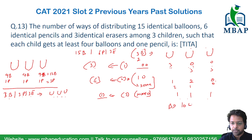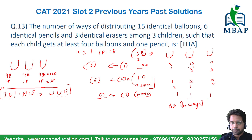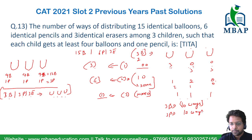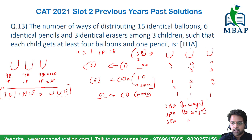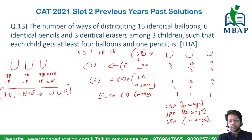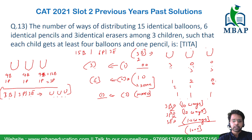So for balloons I found 10 ways. Since the 3 remaining pencils are also identical and distributed to the same 3 children with no restriction, they can also be distributed in 10 ways. Similarly, the 3 remaining erasers can be distributed in 10 ways. The total number of ways is 10 × 10 × 10 = 1,000. So the answer to the given question is 1,000.